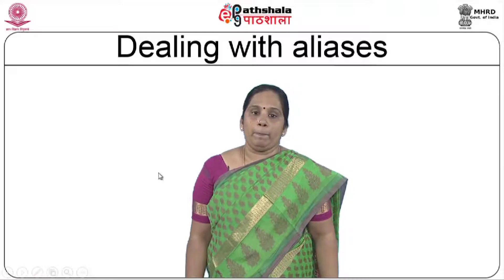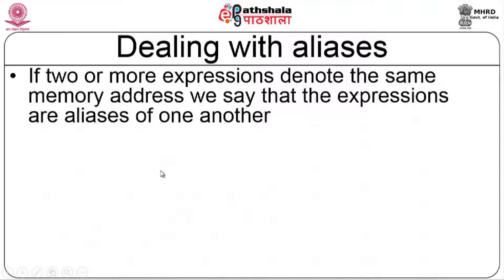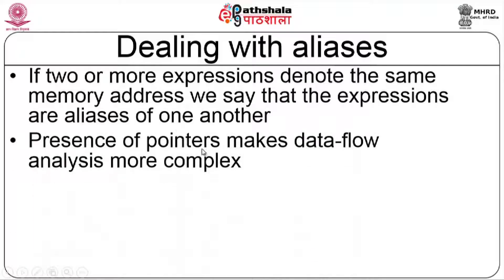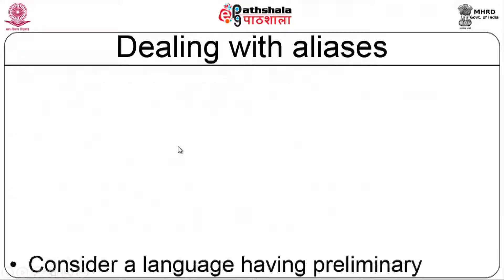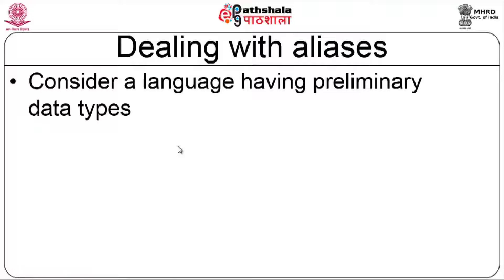Next, we deal with aliases. If two or more expressions denote the same memory address, we say those expressions are aliases of one another. The presence of pointers makes data flow analysis more complex because pointers result in alias situations. An indirect assignment through a pointer can potentially change any variable, so we must watch aliases for potential changes to actual variable contents.